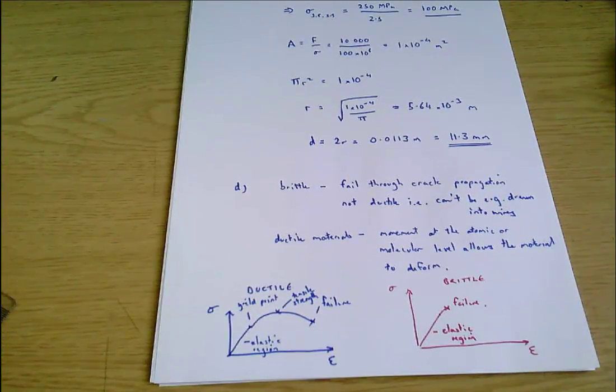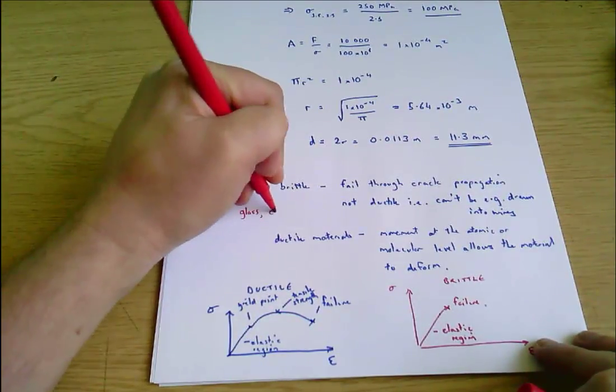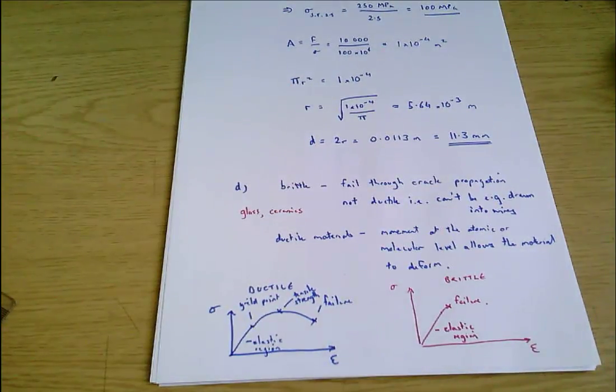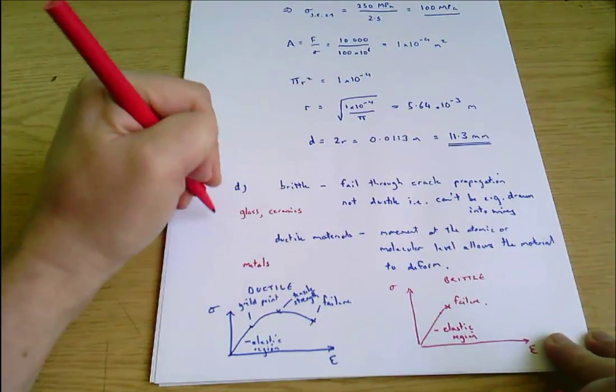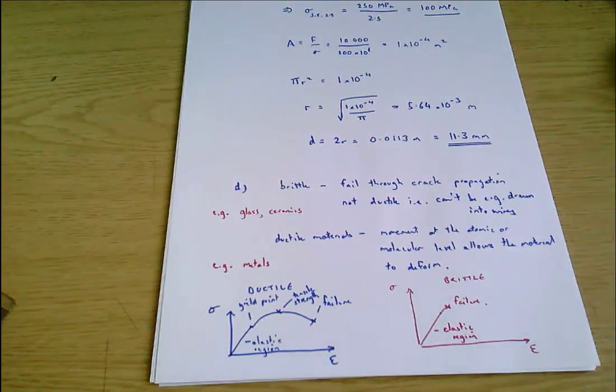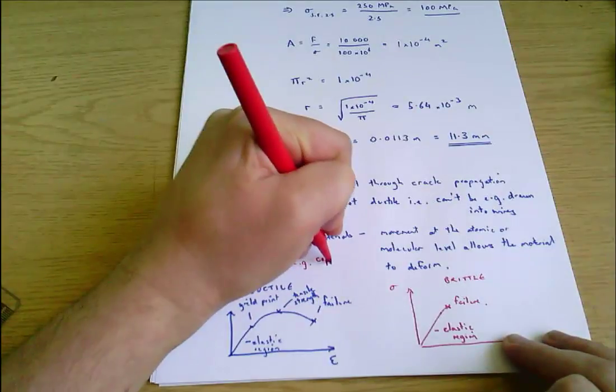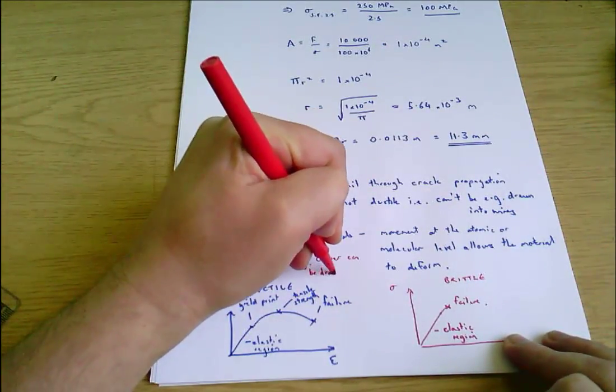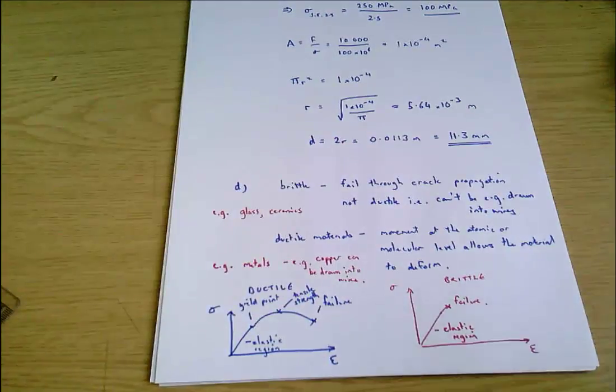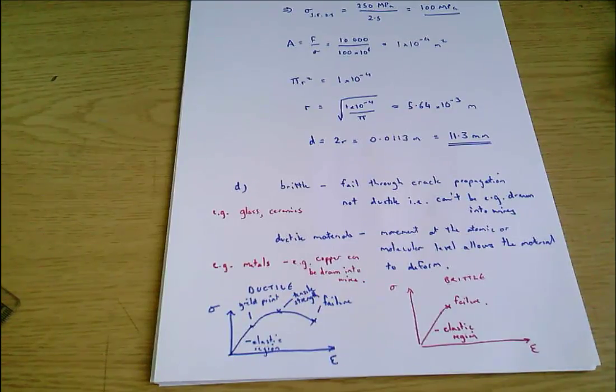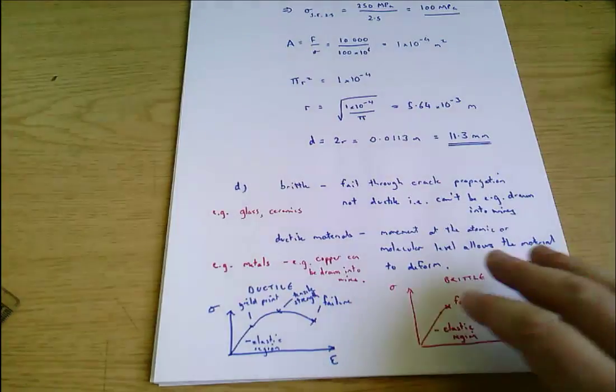Something like that is the kind of answer to part D. There are other things you could say. You could give an example of both. So brittle materials are things like glass, ceramics, and ductile materials - frequently metals are ductile. I'll put an e.g. because obviously this is just examples of things and metals can become brittle and some metals are brittle. But for example copper is a ductile material which is easily drawn into wires. So that's the kind of idea of things that would be good to see if you're asked about brittle and ductile materials.